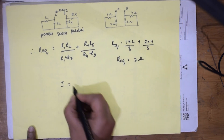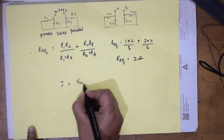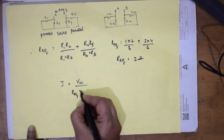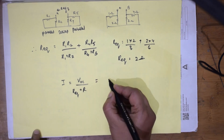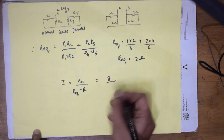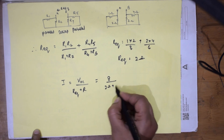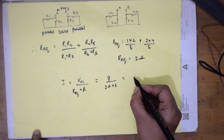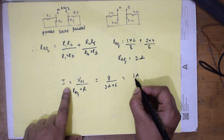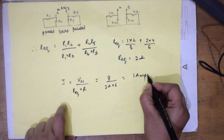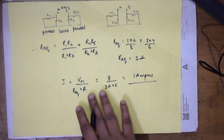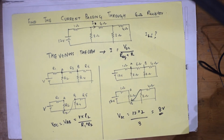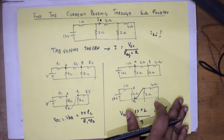Now applying Thevenin's theorem to find the current: I = VOC / (R_eq + R) = 8 / (2 + 6) = 1 ampere. This is the current flowing through the six ohm resistor. This is the easiest and most important way to find the current. This is a very important concept for your JEE Mains exam.